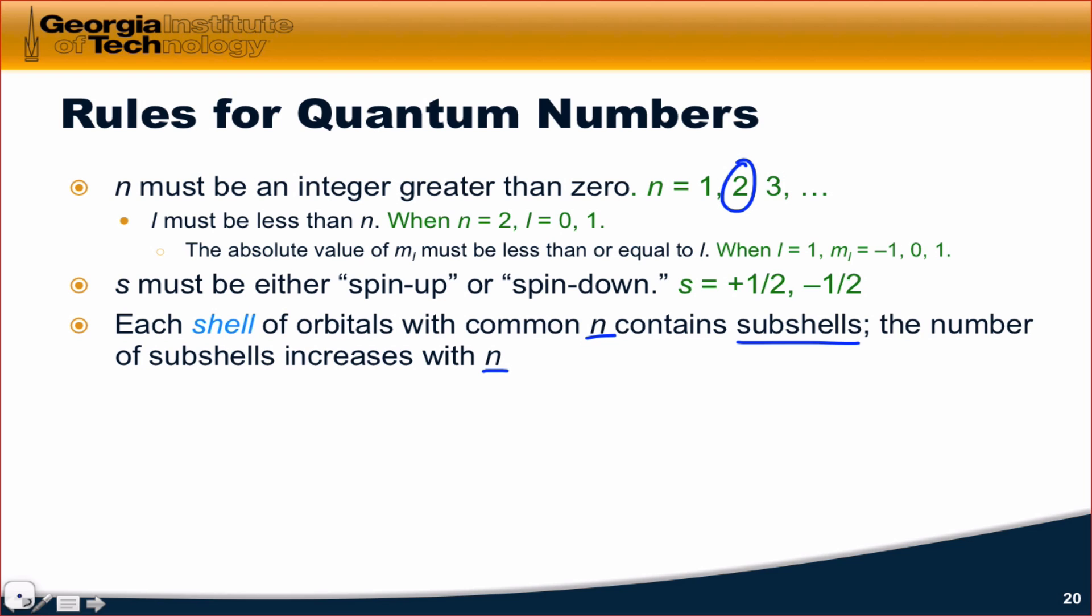Because when n equals 2, we have two values for l. When n equals 3, we have three values for l, and so on and so forth. And as l expands, the possibilities for m sub l expand. So, as n increases, in fact, the number of subshells increases as n squared.